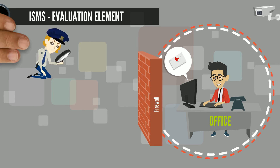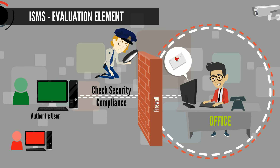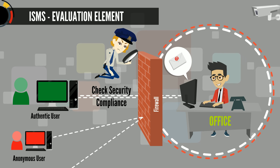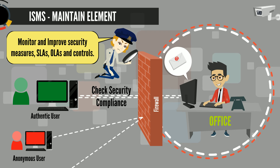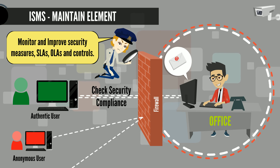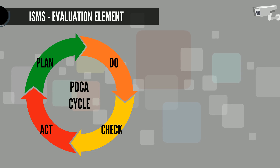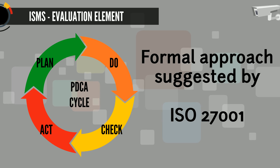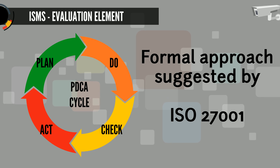Evaluation is to supervise and check compliance with security policy and security requirements, perform audits of technical security of IT systems, and provide information to auditors. The Maintain objective is to improve security agreements, implementation of security measures and controls. This should be achieved using a PDCA cycle, which is a formal approach suggested by ISO 27001 for the establishment of the information security management system.